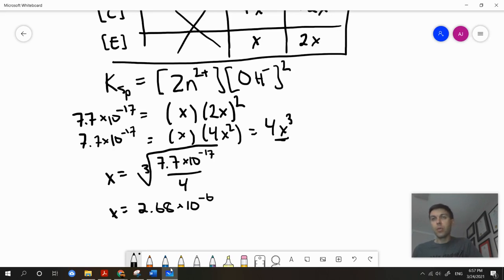Remember, x represents the molar solubility so this value is a concentration and here is our answer. The molar solubility is 2.68 times 10 to the negative 6. Or in other words, in 1 liter of water we can dissolve 2.68 times 10 to the negative 6 moles of zinc hydroxide.